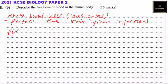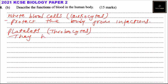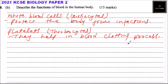The last component is platelets, also known as thrombocytes. They help in the blood clotting process — they gather around the injured part and cover the open wound so that there is no further loss of blood.